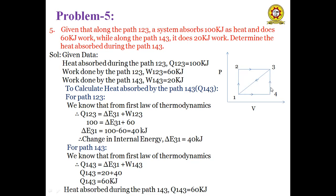For path 1-4-3: Q = ΔE + W = 40 + 20 = 60 kJ. Since positive, this represents heat absorption. Therefore, heat absorbed during path 1-4-3, Q(1-4-3) = 60 kJ.